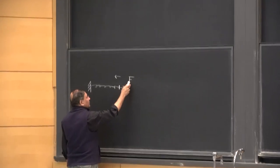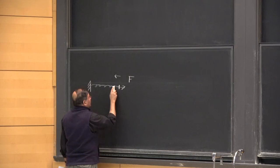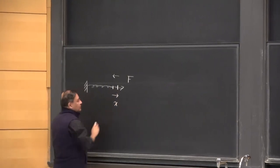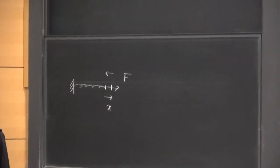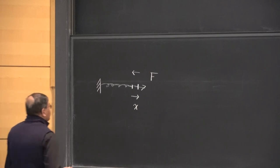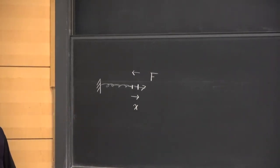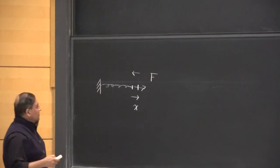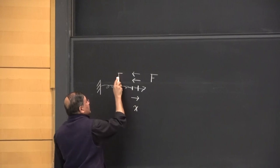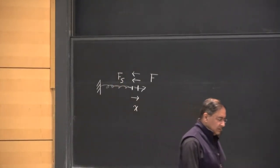Suppose I apply a force F to the right — the displacement is going to be to the right. In other words, if this was the edge of the spring, it has been displaced in the direction in which I applied my force, because I am pulling the spring. Now, the spring wants to go back to its original equilibrium position, so the spring generates its own restoring force, which we'll call the spring force Fs.